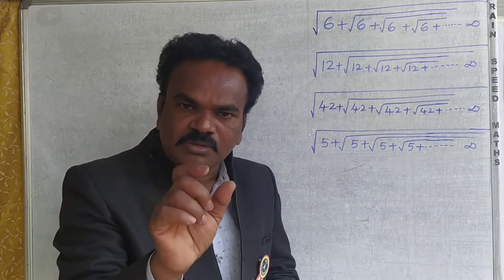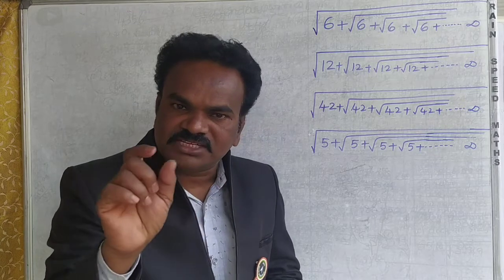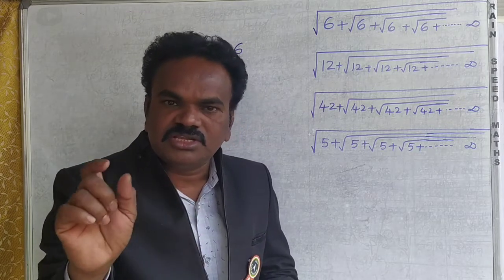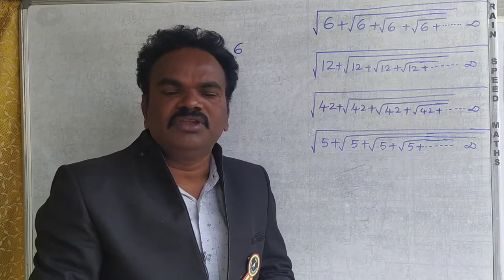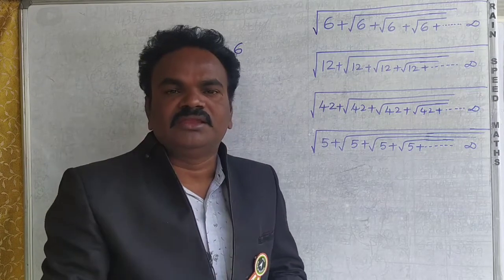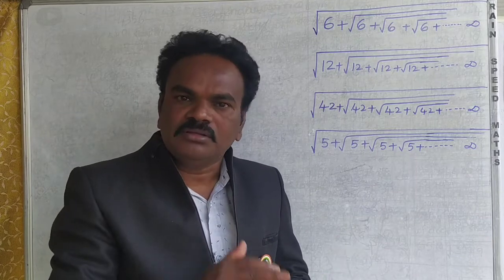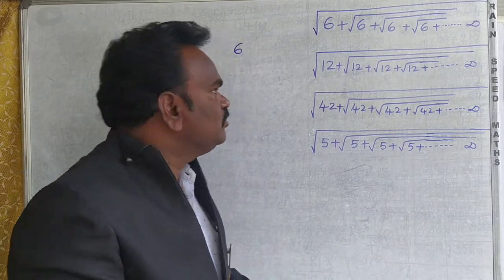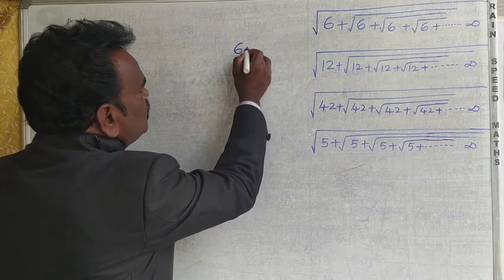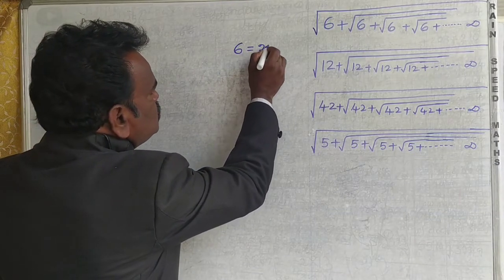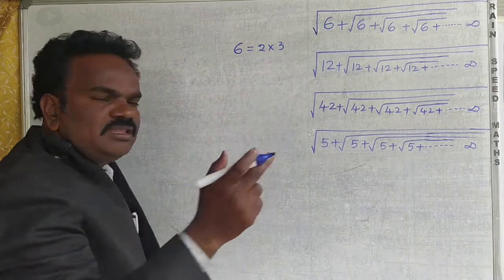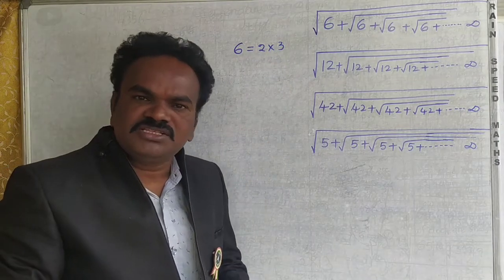For example, one number is 6. You can write 2 into 3. These are consecutive numbers — 2 and 3 are the consecutive terms.